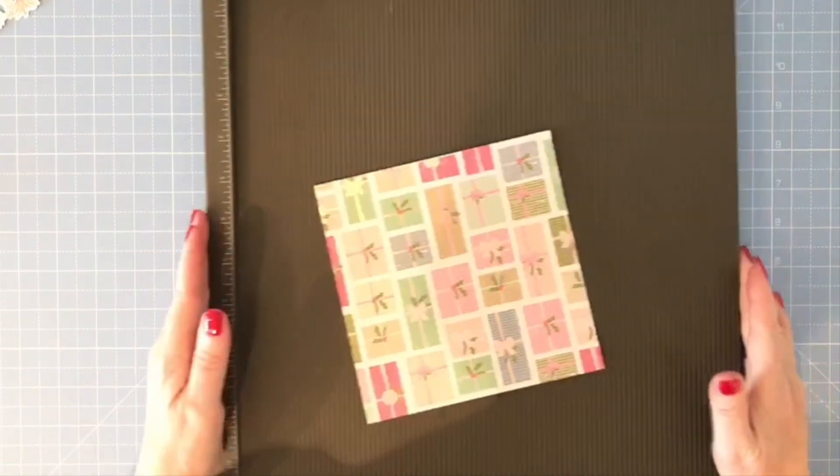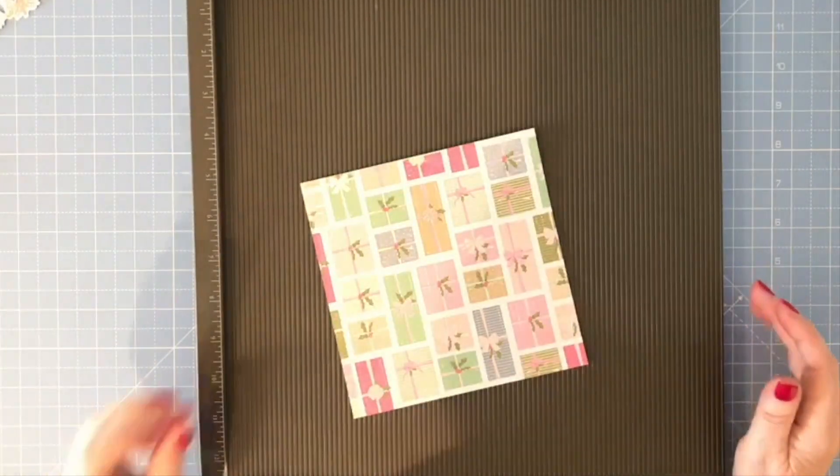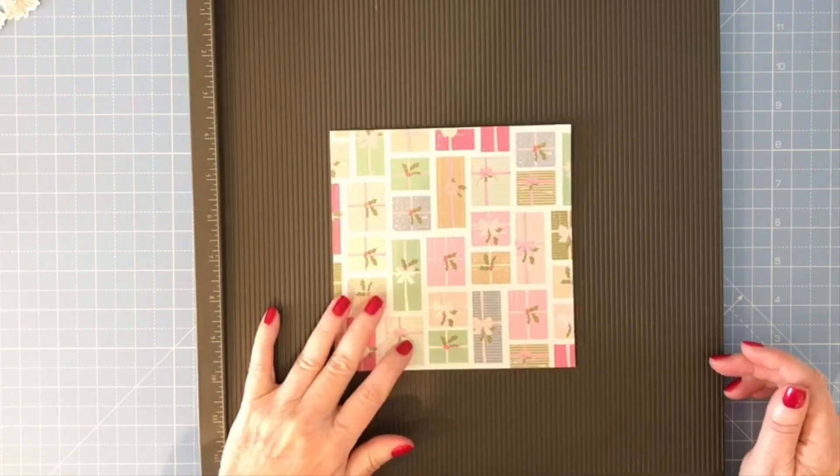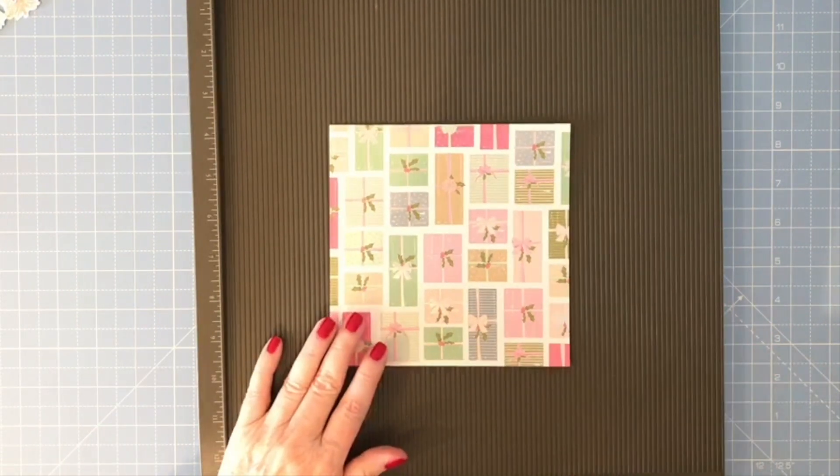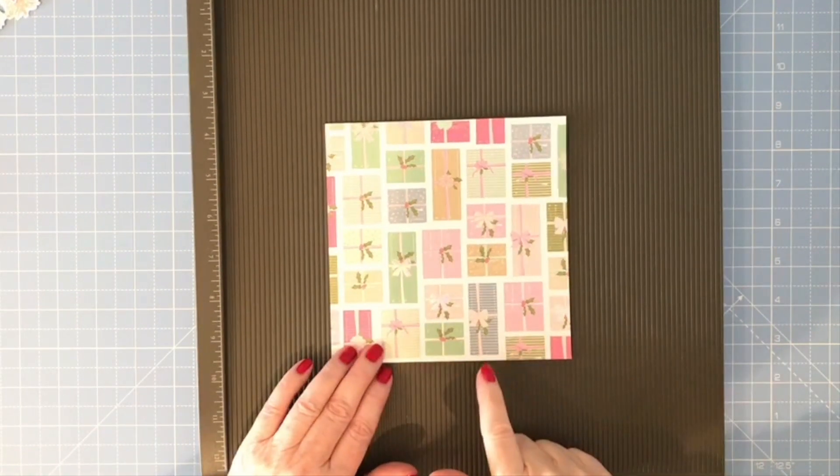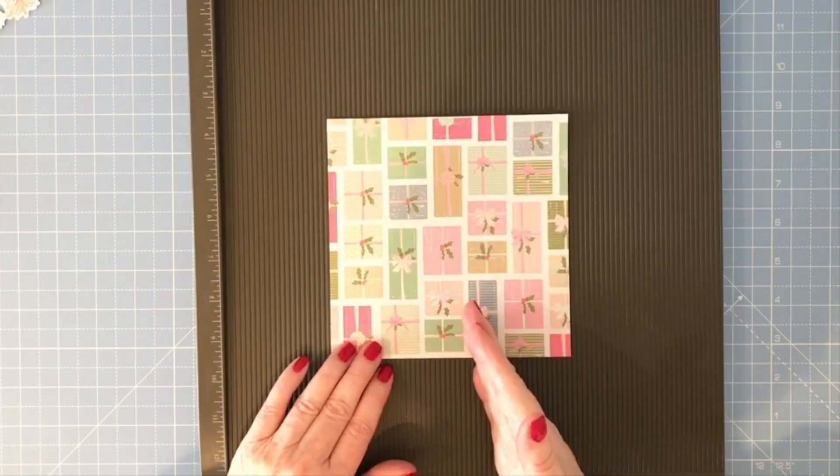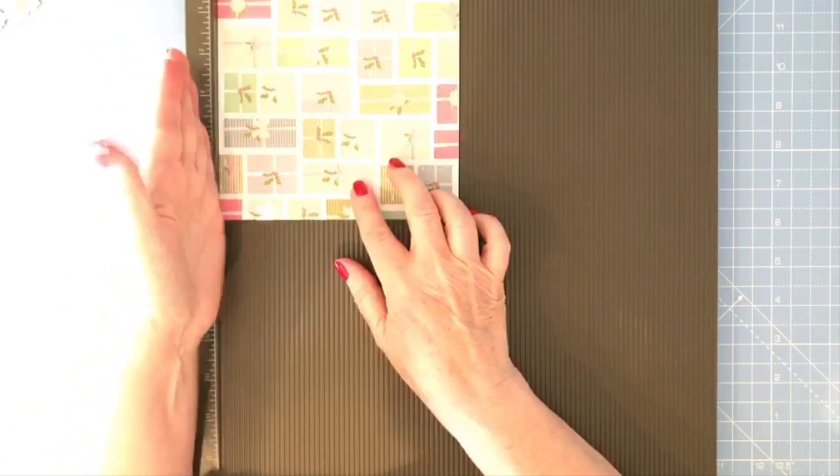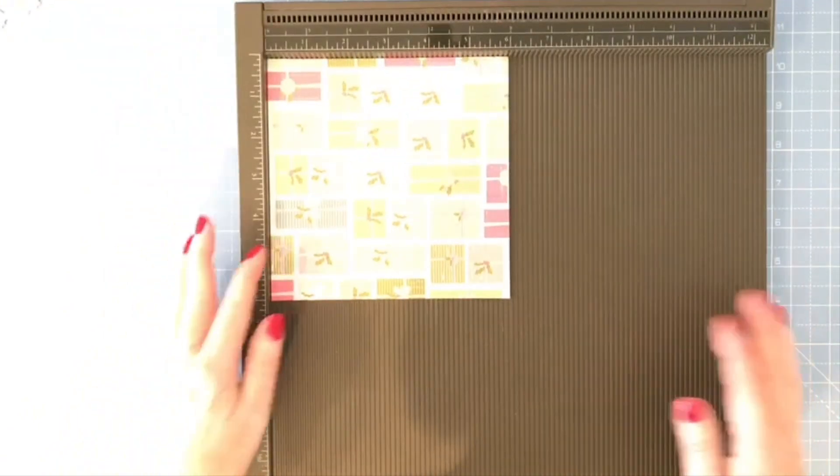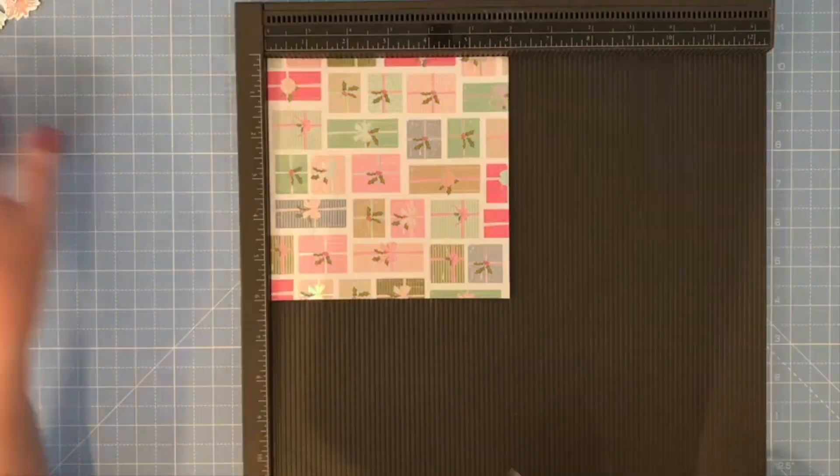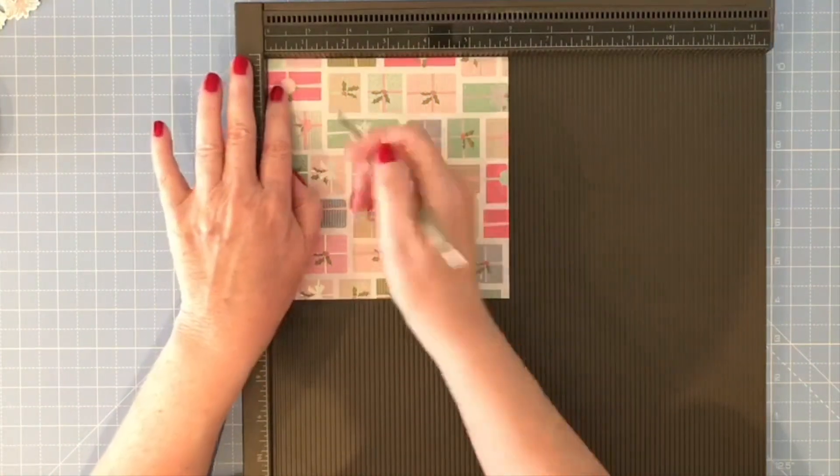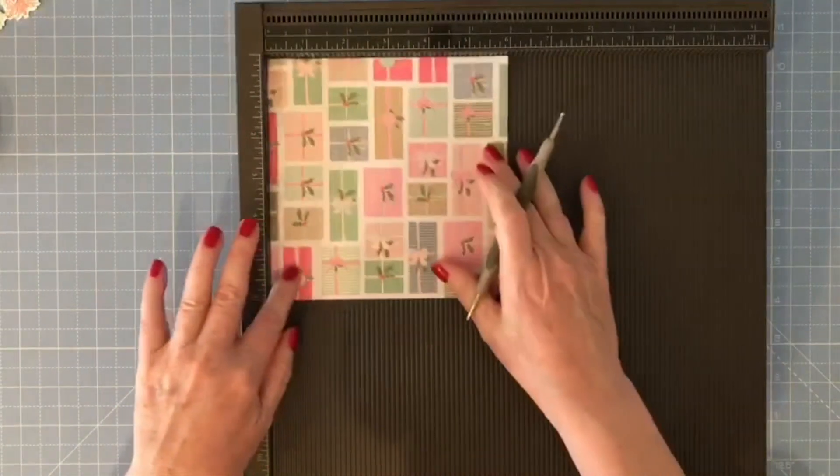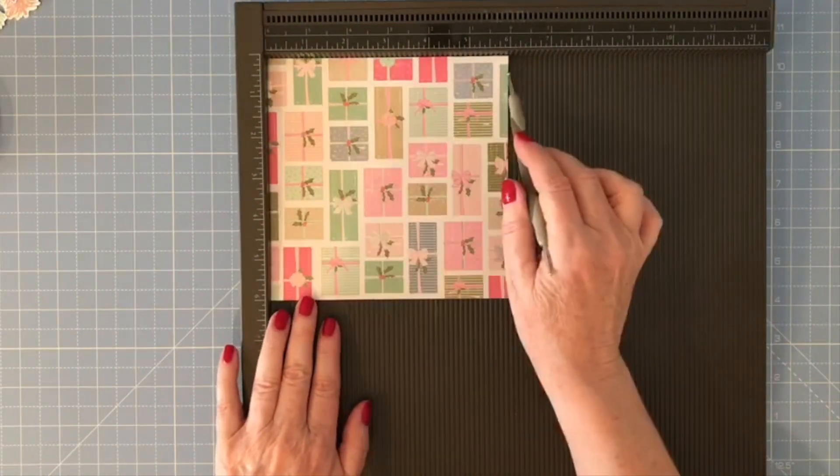If you hear any noise in the background, I've got the door open because my new puppy is running around. If your paper has a direction, you want to start with it in the right orientation. I'm going to turn the bottom so it's in the left hand side of my Simply Scoreboard and I'm going to score this at one inch. Then I'm going to rotate it back so this is the bottom and this is the top.